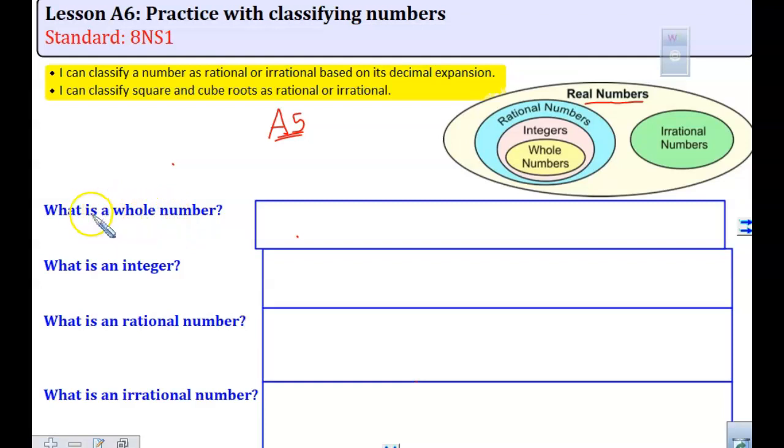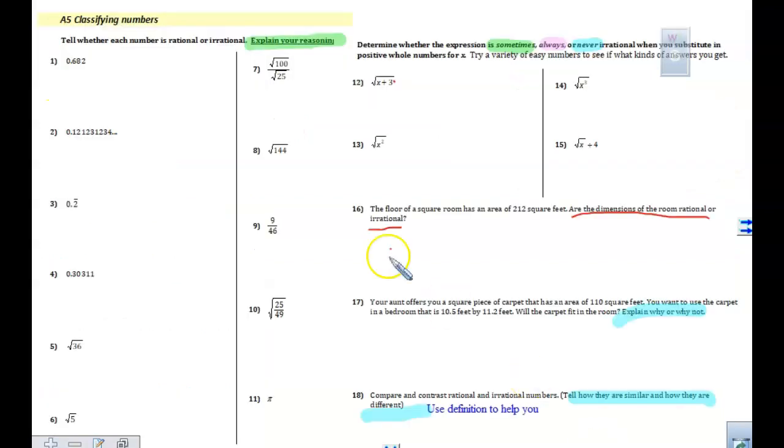So what is a whole number? What is an integer? What is a rational number? And what is an irrational number? As you are looking at writing those down, I just want to go back and talk about yesterday's assignment. So try and write those right now.